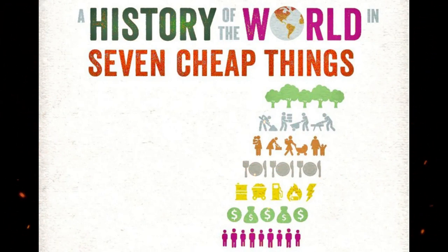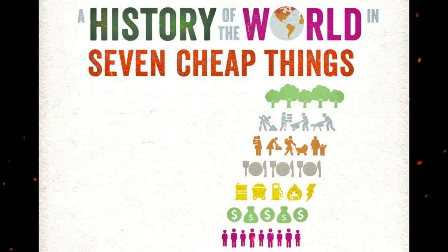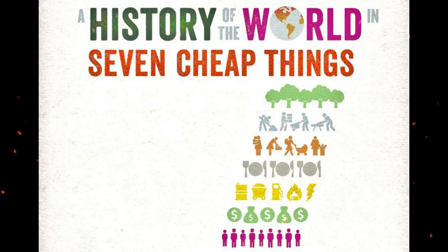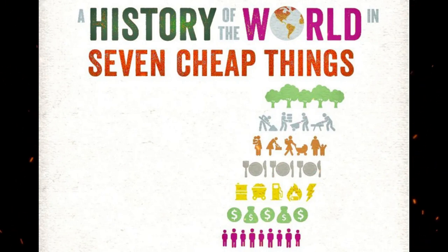The large-scale rearing of chickens is extremely energy-intensive, depending on the availability of cheap fossil fuels — for example, to heat enormous barns — introducing cheap energy to the process. The whole industry from top to bottom is subsidized by national governments: cheap money for the corporations involved.